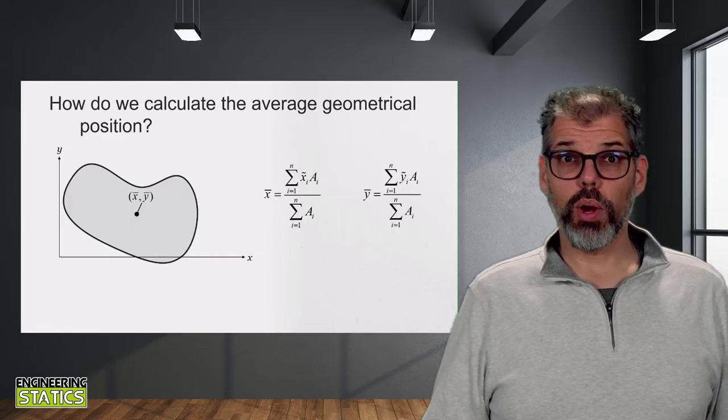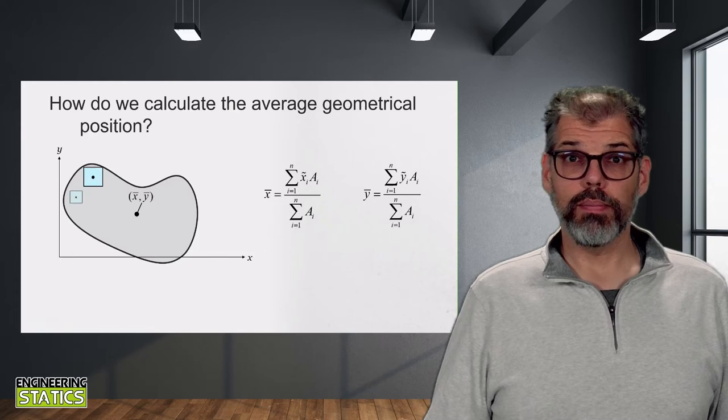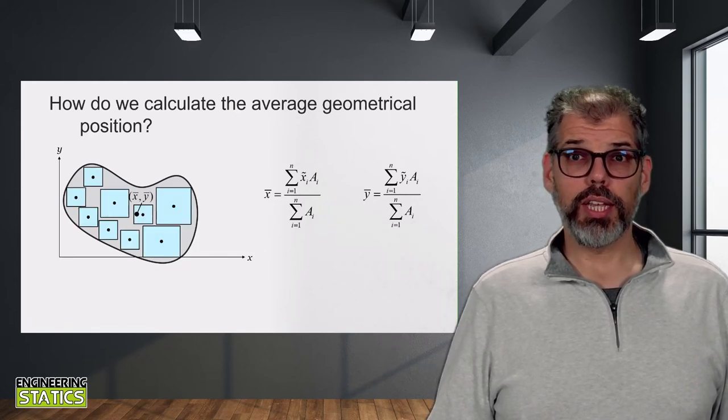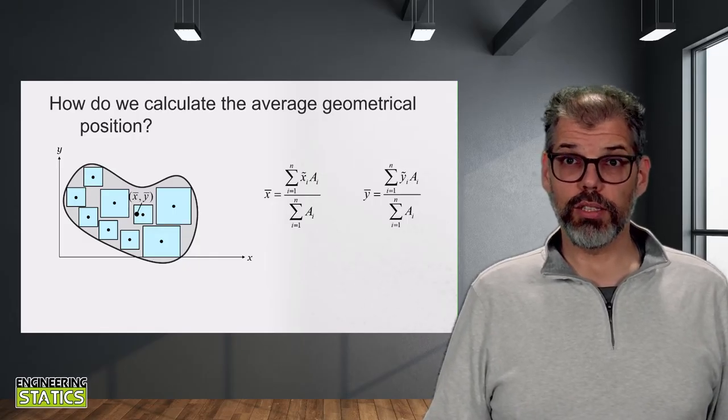Well, we can make the squares and rectangles smaller and add more of them. This would get us closer, but there are still gaps in the area, so to really make it general, we need to make our squares infinitely small.